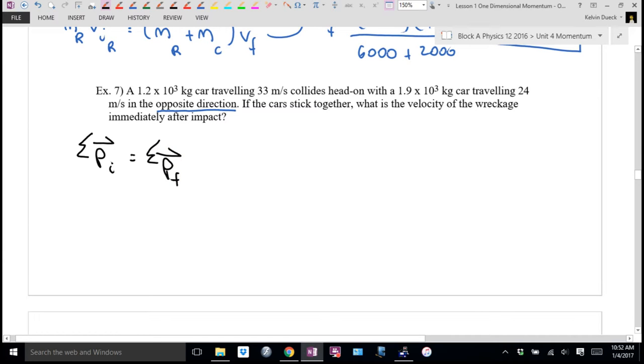The sum of all the momentum that we started with has to equal the sum of all the momentum that we finish with. Before the collision, what's moving? Car one, car two, both, or neither? Both. So I'm going to go momentum of car one initial plus momentum of car two initial. They collide. After the collision, what's moving? Both stuck together. So we would write that as momentum both final.